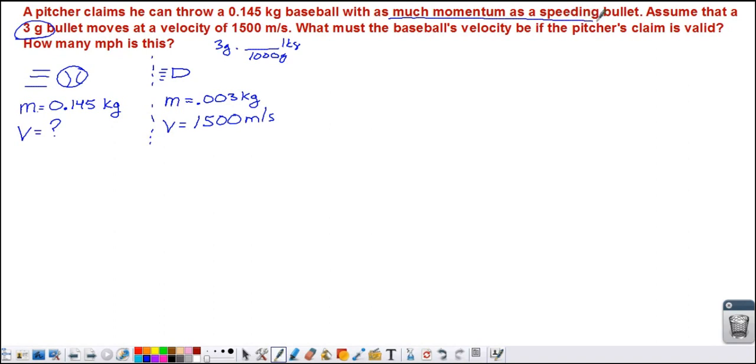But we do know the velocity of the bullet is 1,500 meters per second. And the claim is he can throw the baseball with as much momentum as the speeding bullet. So let's figure out how much momentum the speeding bullet has.